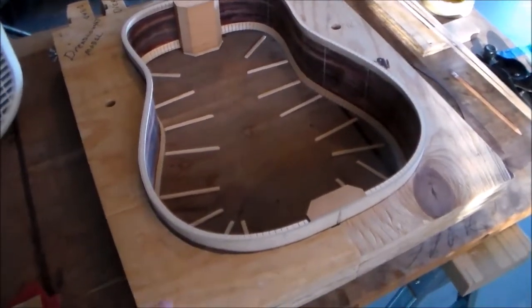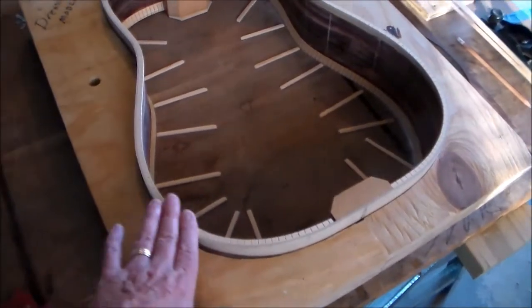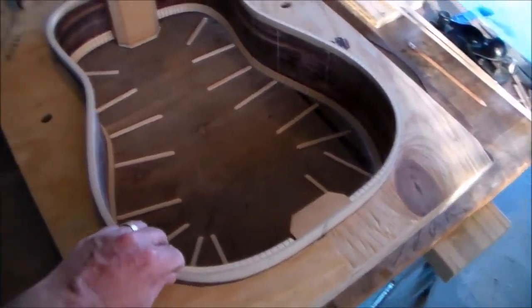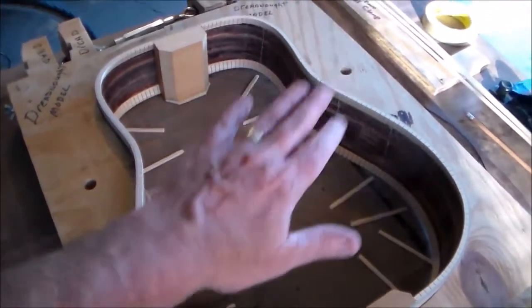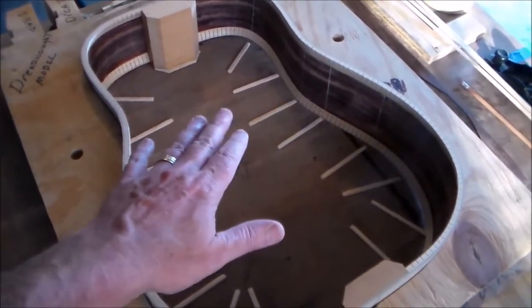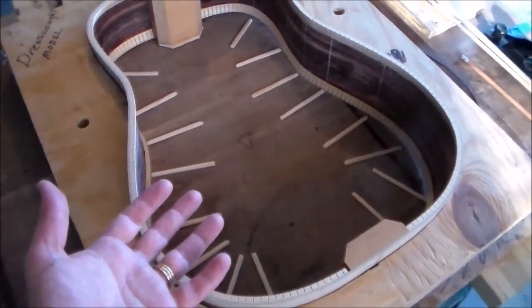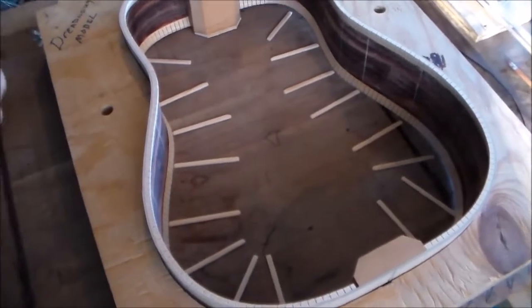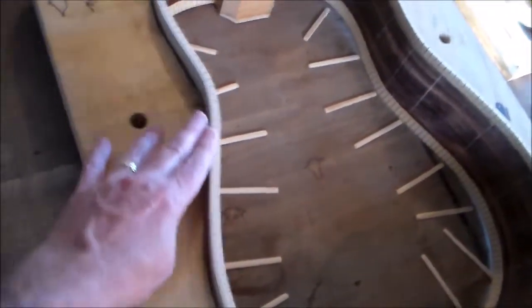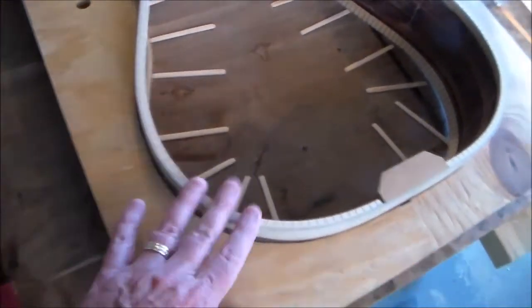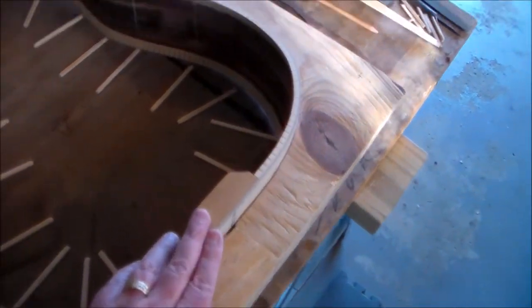Okay, so now the kerfing glue is dried, and this is what it looks like afterwards. We removed all the clothespins that we were using for clamps. Then we put the radius dish on it, the 30-foot radius for the front and the 15-foot radius for the back. And we drove the bus again, and that sanded all of the kerfing down even with the sides that we sanded in the previous step. So now what we've done is put it back in the form.